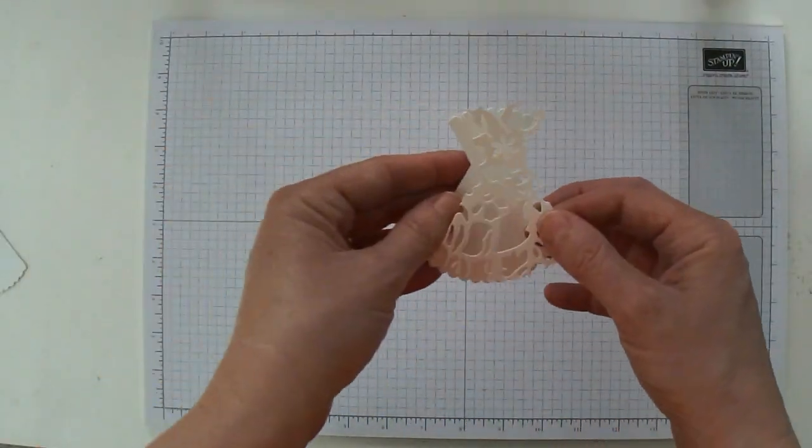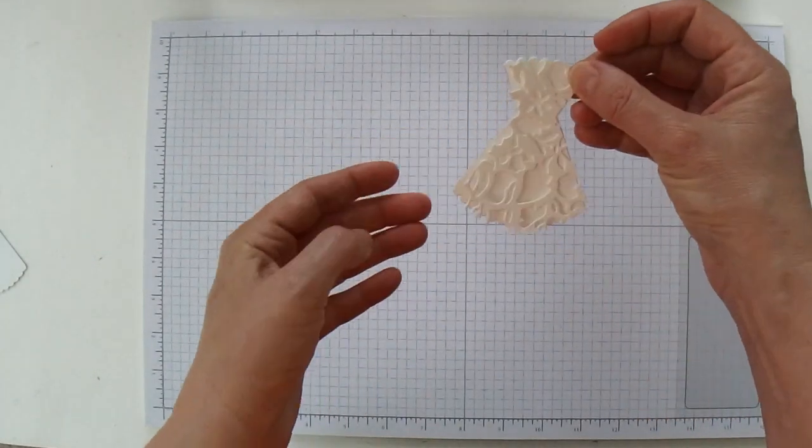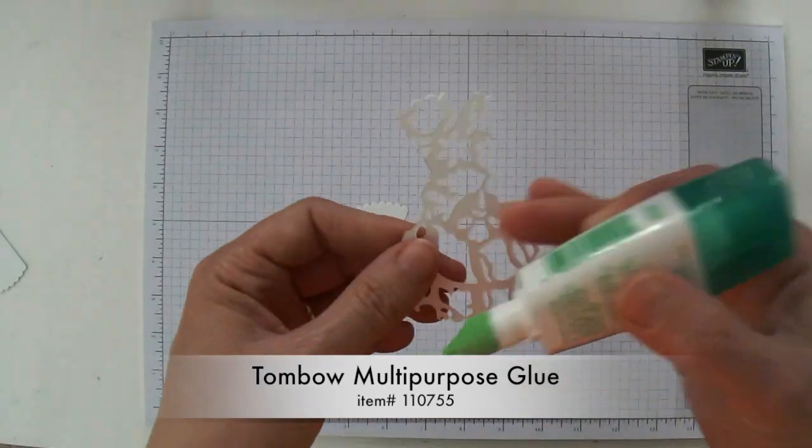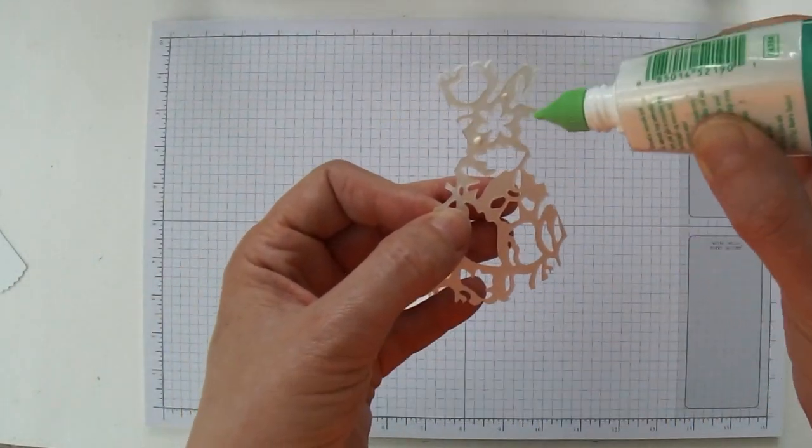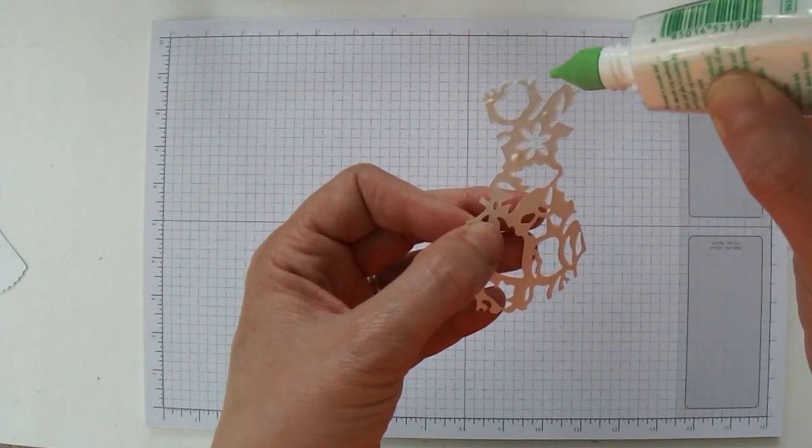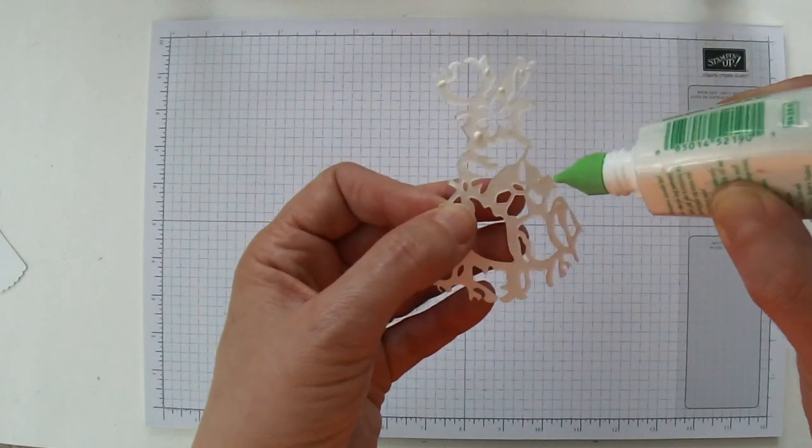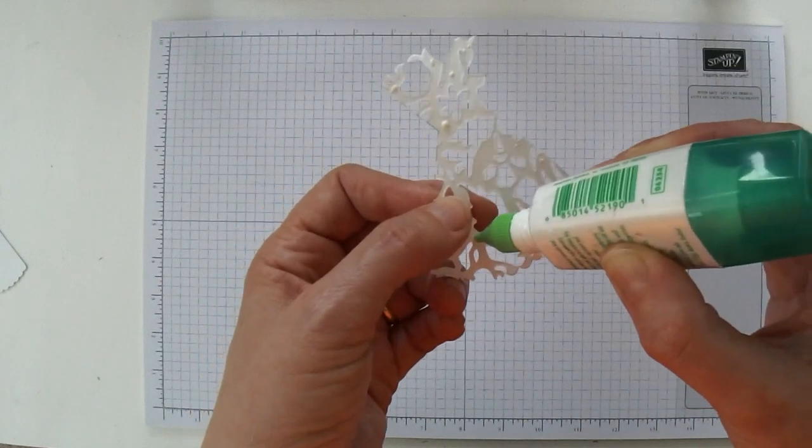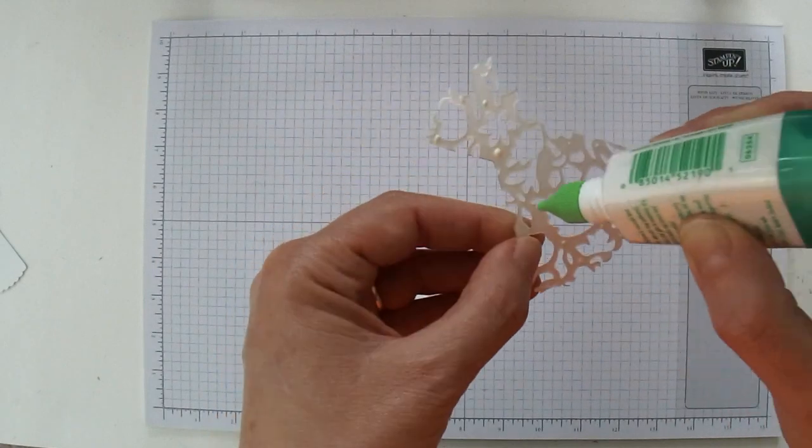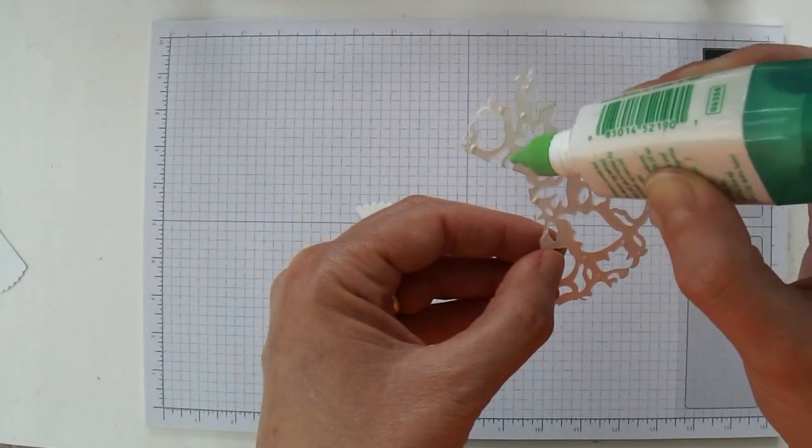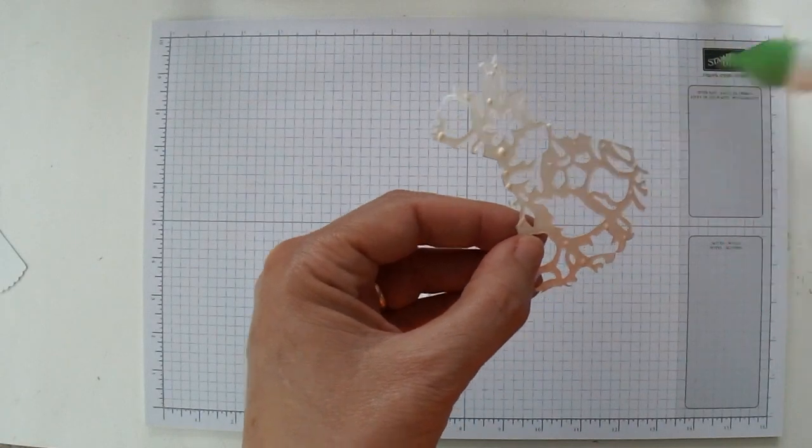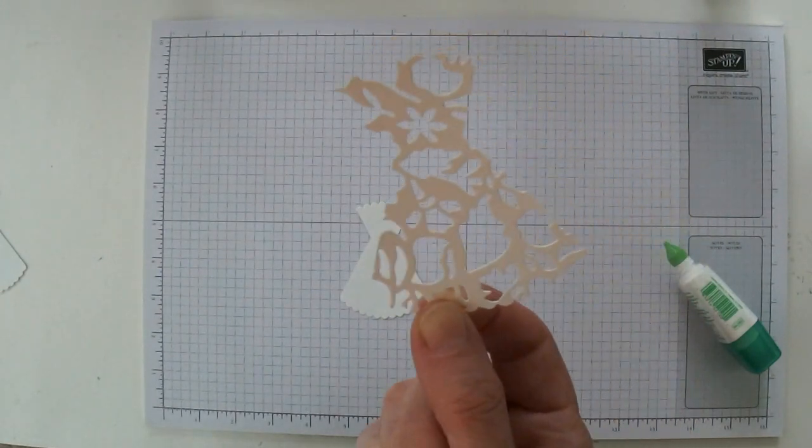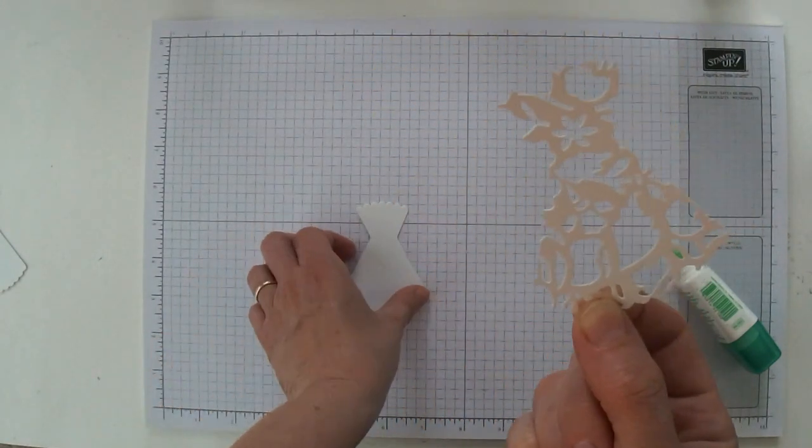And then we can lay that right on top of our other dress. And so we just need to put some Tombow on the back. Just put some dots kind of in some of these outer locations. The smaller the dot the better because this will ooze out if your dots are too big. And I know this actually, if you have a look at this, this kind of looks kind of bad without the backing on it.